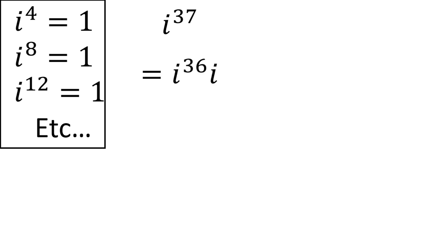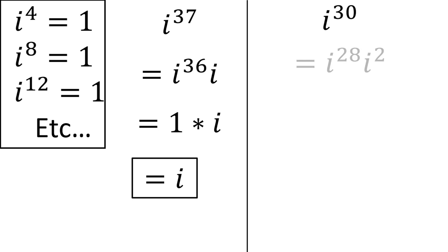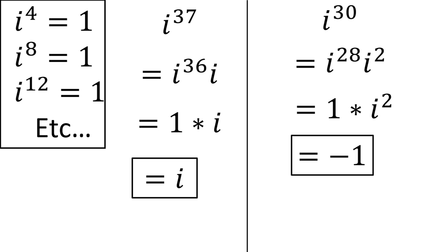And since 36 is a multiple of 4, it will just be 1. So we have 1 times i, which is equal to i. Let's try another one. i to the 30th can be broken up into i to the 28th times i squared. 28 is a multiple of 4, so i to the 28th must be equal to 1. So we are left with i squared, which we already know is equal to negative 1.